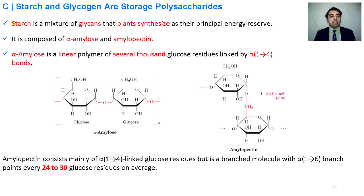Another example is starch. Starch consists of two elements: one is alpha-amylose and the other is amylopectin. Alpha-amylose is made from alpha-D-glucose through the 1,4-glycosidic bond, while amylopectin contains not only the straight chain of alpha-1,4-glycosidic bonds but also branching after 24 to 30 glucose units because of 1,6-glycosidic bonds.